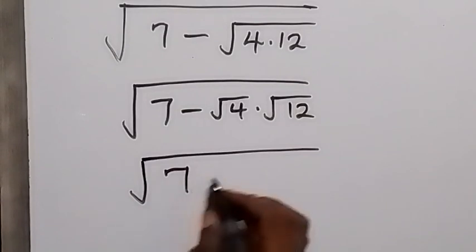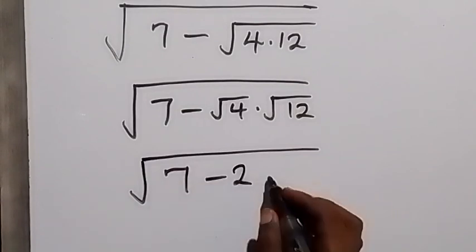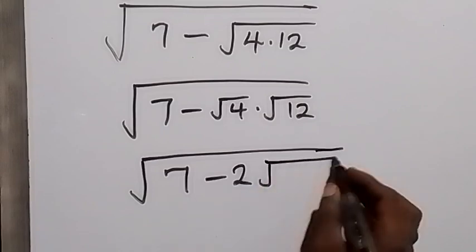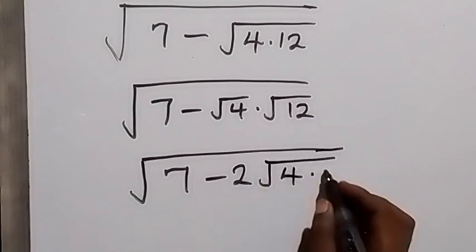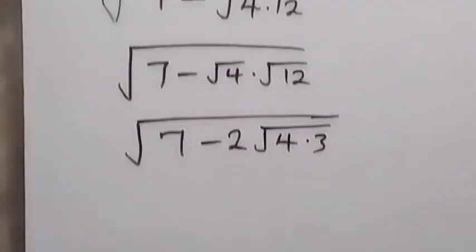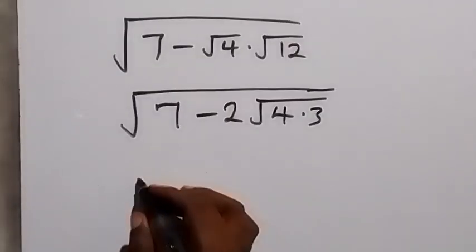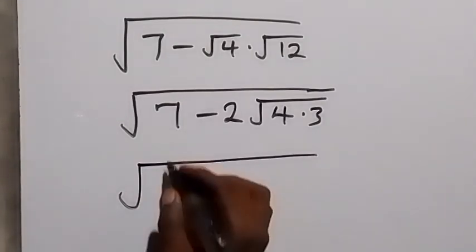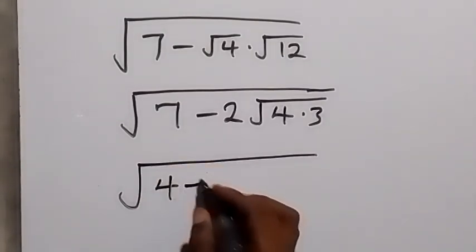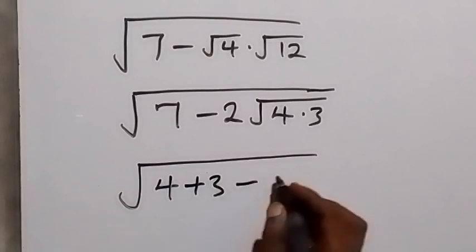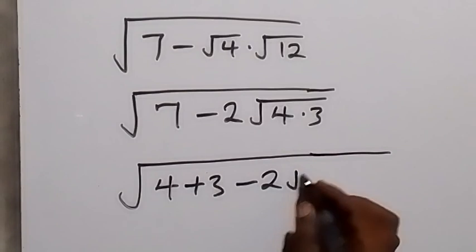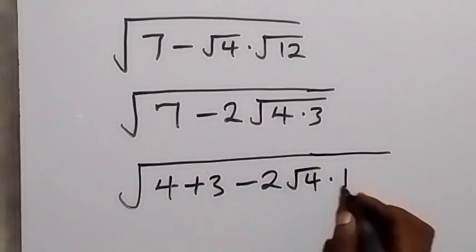For 12, we can write it as square root of 4 times 3. In the next step, we write this as square root of 7 minus 2√4 × √3. Here we can write 7 as 4 plus 3, then minus 2, and separate this as √4 times √3.